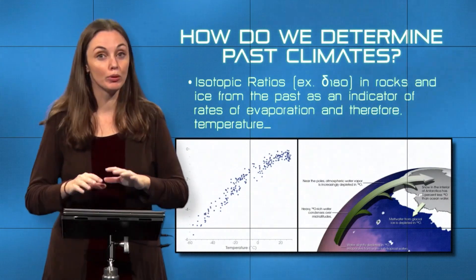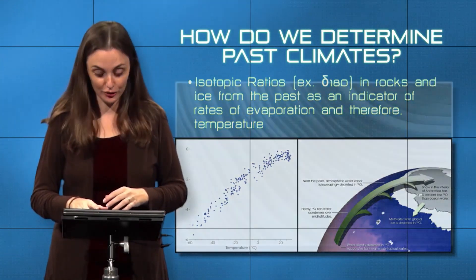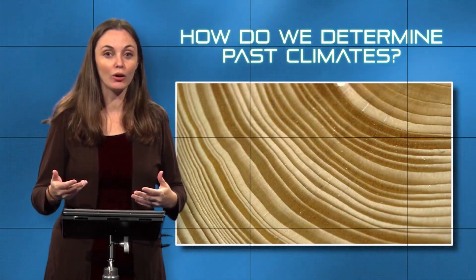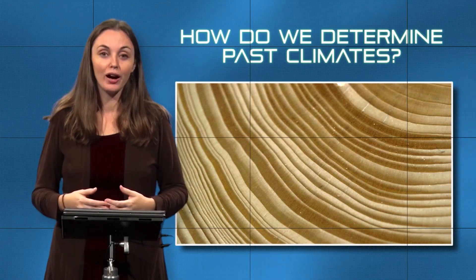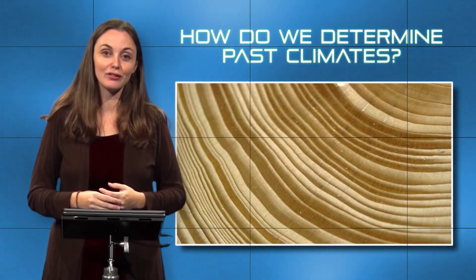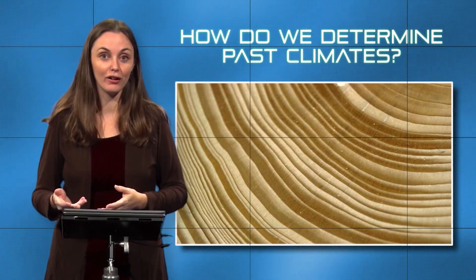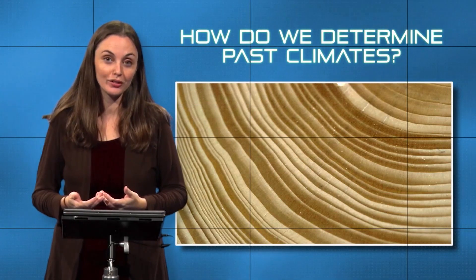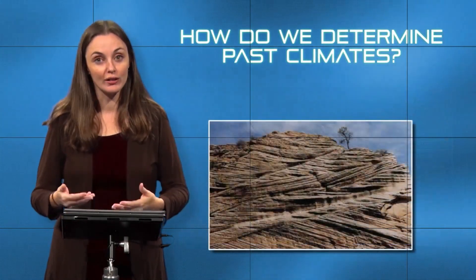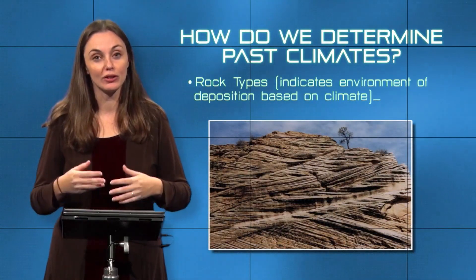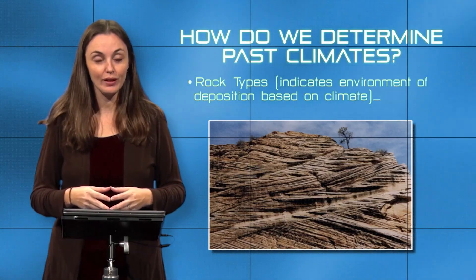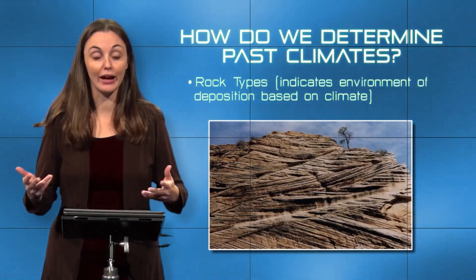That oxygen isotope ratio is probably our most important proxy for temperature, but there are others. Tree rings can tell us how severe a winter was — the thickness of tree rings indicates how cold that particular winter was. You can even use sedimentary rocks deposited on Earth's surface in the past as a record for temperature and other aspects of climate.